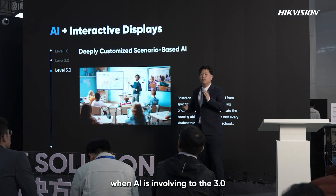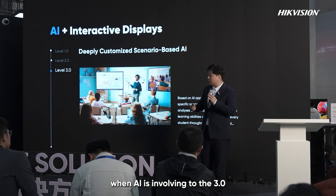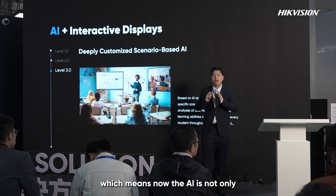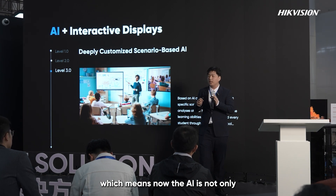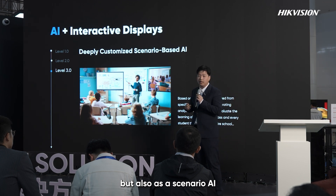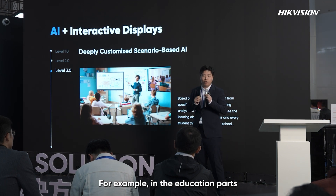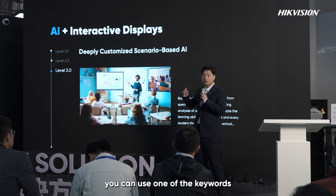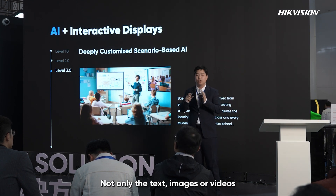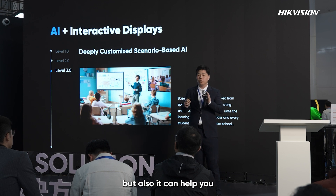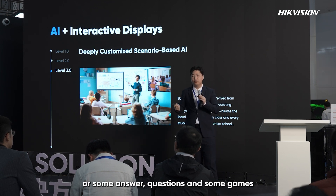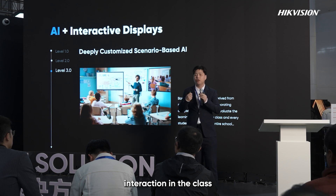As AI evolves to the third stage, we call it Deeply Customized Scenario-Based AI. The AI is no longer just a general assistant, but a scenario-specific one. In education, you can use keywords to create entire courseware — not just text, images, or videos, but also quick quizzes, answer questions, and interactive games in the classroom.